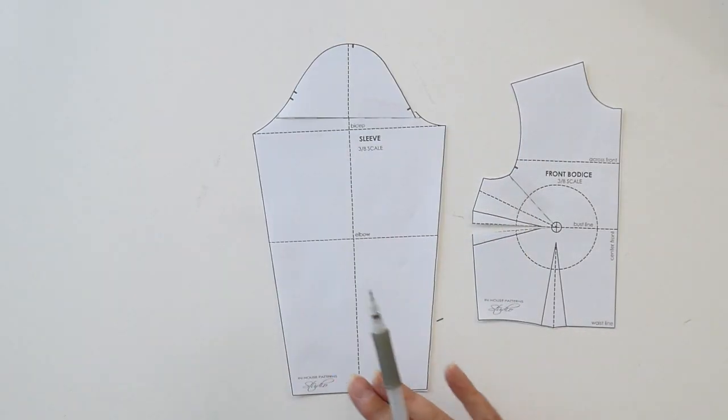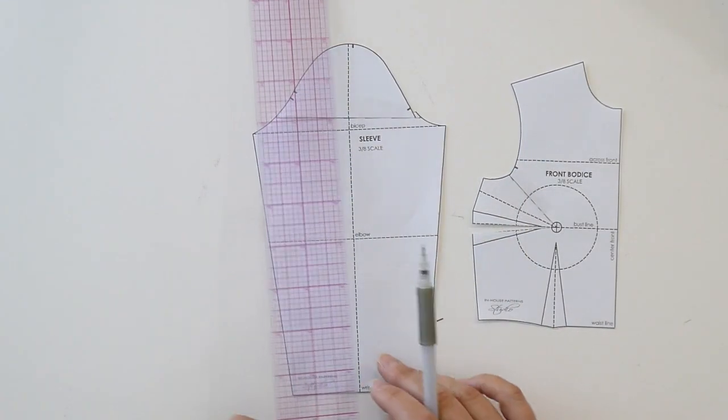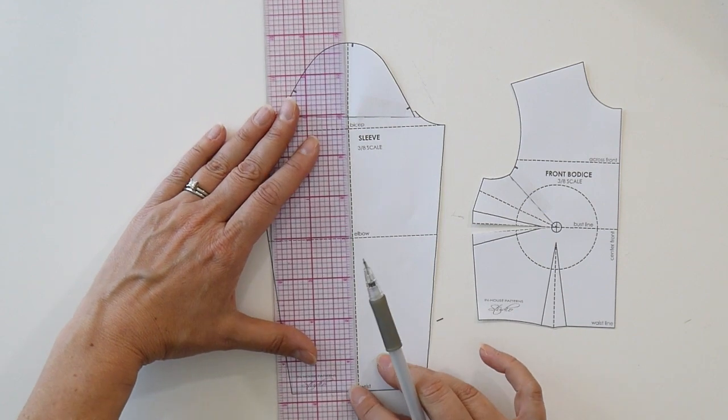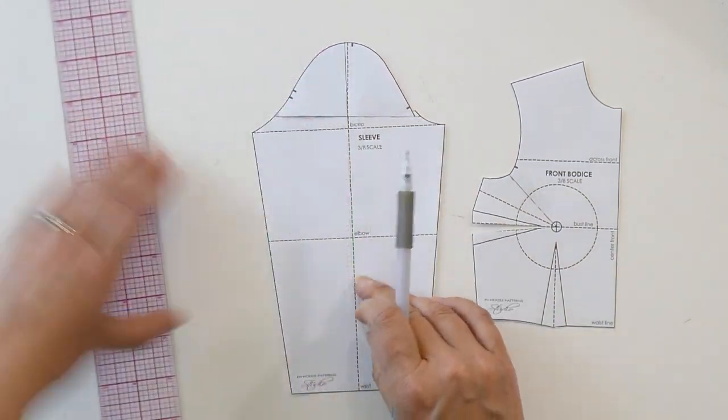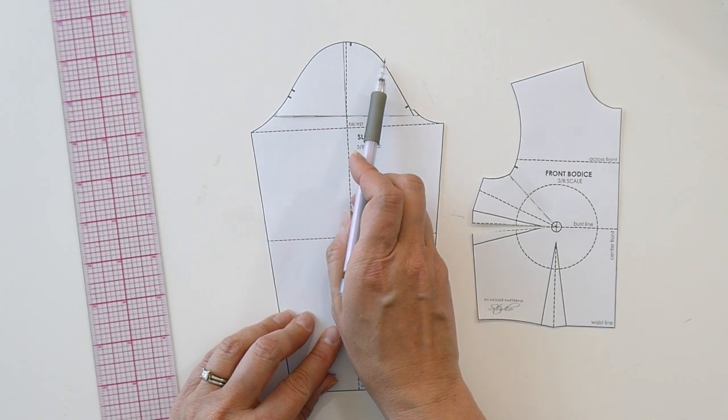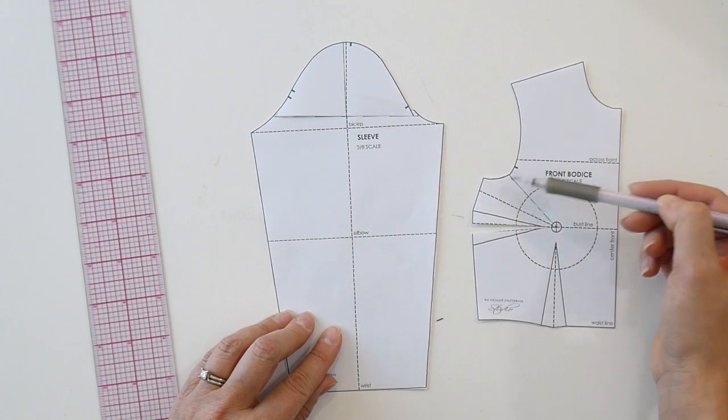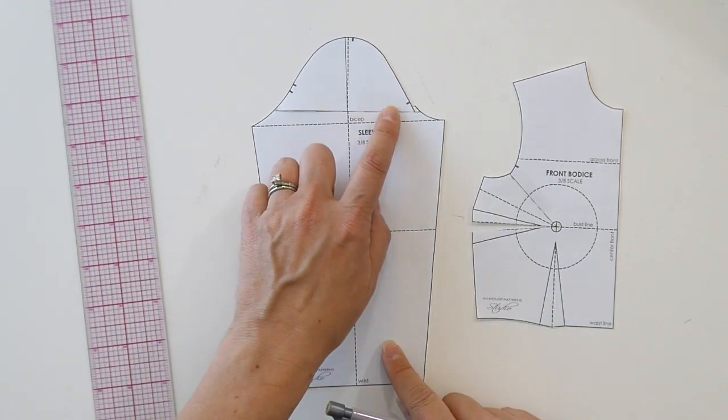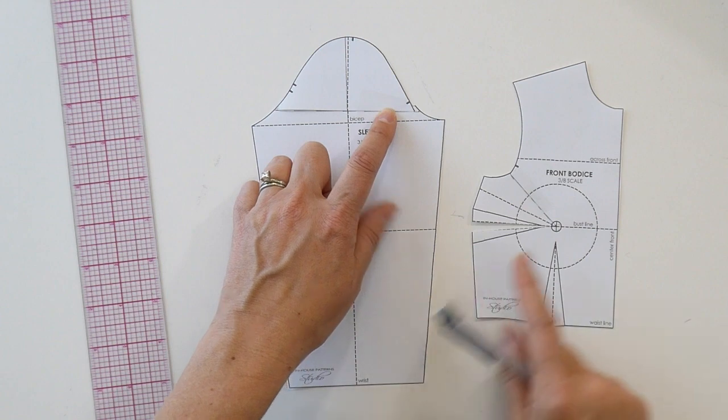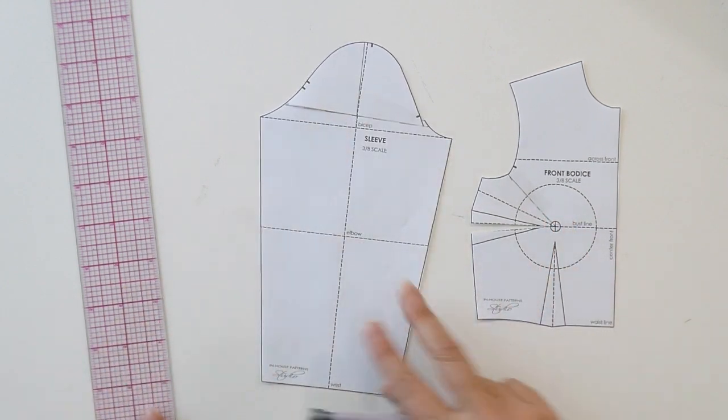Now there's just one more step that you need to take, and that is just to straighten out your center sleeve line or the green line. So this is going to pitch your sleeve head a little bit forward, which is obviously what you need if you're shortening your front armhole. Once we've corrected that sleeve, we are completed with this pattern correction.